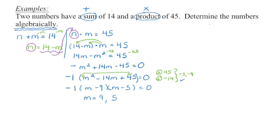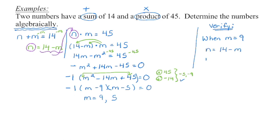It's important that we verify these two values. I've got two solutions — let's start with the first one. When m is equal to nine, I'm going to go back to the original equation I started with. I know the value of m now, so I'm going to find the value of n. Taking that equation, n is equal to 14 minus m. When m is nine, n happens to be five.